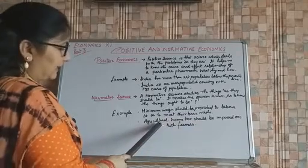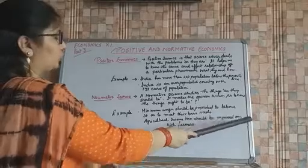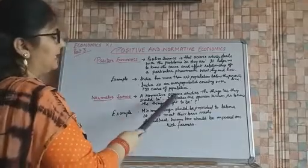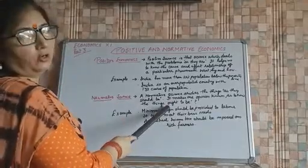Now, second is, agricultural income tax should be imposed on rich farmers. It means, it deals with what ought to be or what should be.